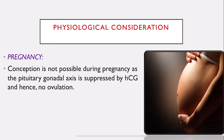During pregnancy, conception is not possible as the pituitary-gonadal axis is suppressed by HCG and hence no ovulation occurs. The human chorionic gonadotrophin hormone increases during pregnancy and this increased level of HCG suppresses the pituitary-gonadal axis so ovulation does not occur. Once there is no ovulation, there is no prepared egg, so pregnancy cannot occur again during an existing pregnancy.